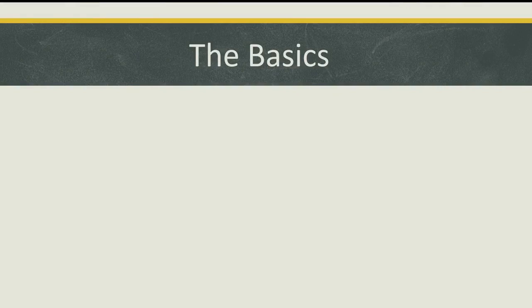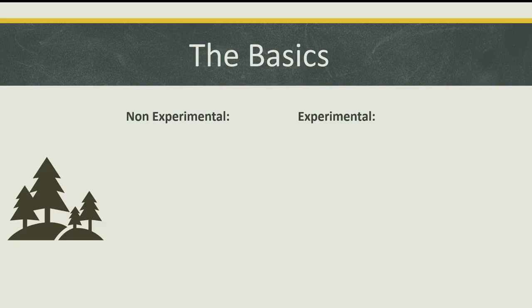First I want to give you a general overview between non-experimental and experimental research. In general, non-experimental research measures variables that occur naturally in the world, whereas experimental research involves measuring variables that a researcher splits into groups and creates an experiment by tinkering and constructing methods. You could think of non-experimental as being a natural tree or forest, whereas experimental would be more like tools in which you're tinkering and constructing experiments.